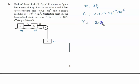Young's modulus is given by 2 × 10^11 N/m². Neglecting friction, we have to calculate the longitudinal strain on wire B.